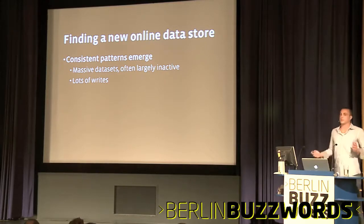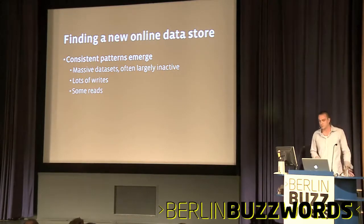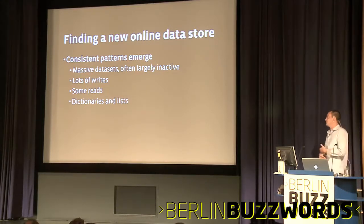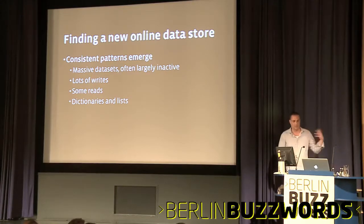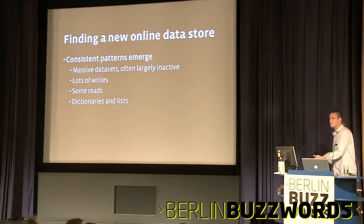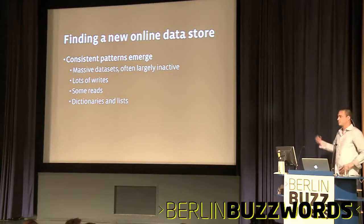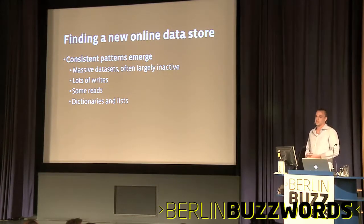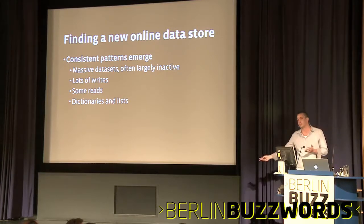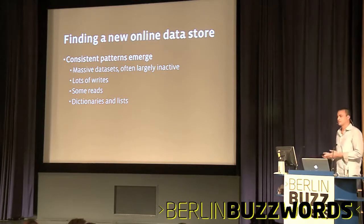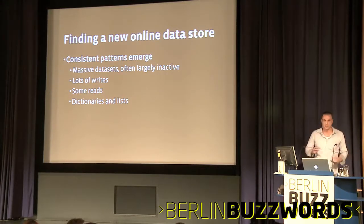Lots and lots of writes — very, very write-heavy systems, with some reads but fewer reads than writes. Also, dictionaries and lists. Dictionaries and lists are basically 95% of all the data: you have entities like a user, a group, a profile, a page, or an application, and they have a bunch of dimensions like name, email address, and ID. And lists are kind of like associations — here's the different posts in my feed, here's my friend list. A vast majority of data fits into a very simple type of schema, but you don't really need a full row-oriented RDBMS.